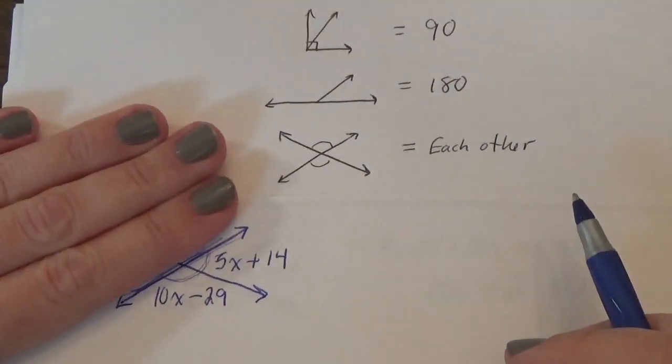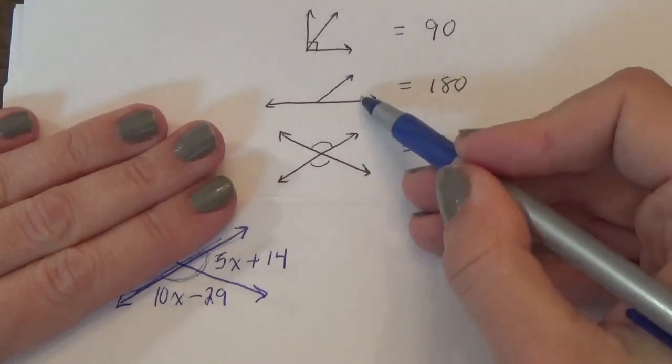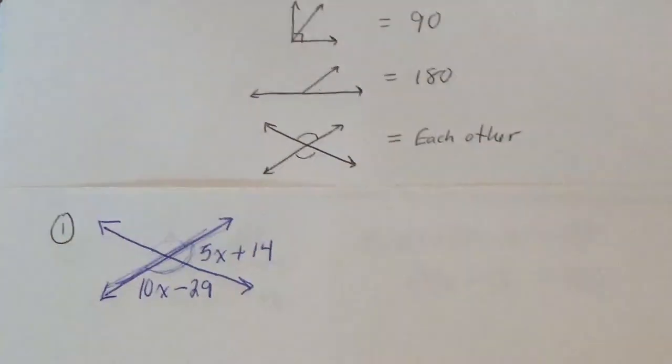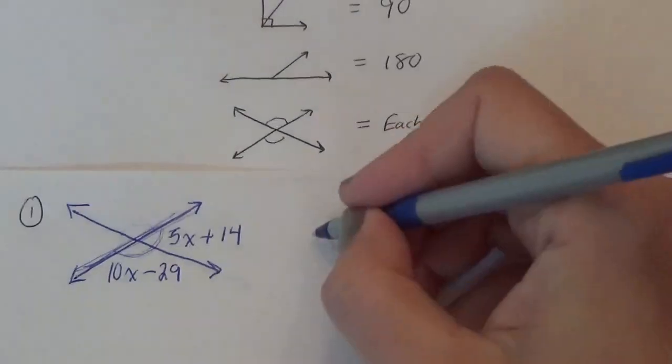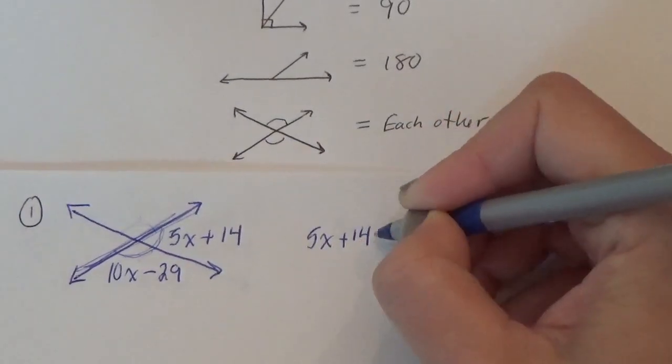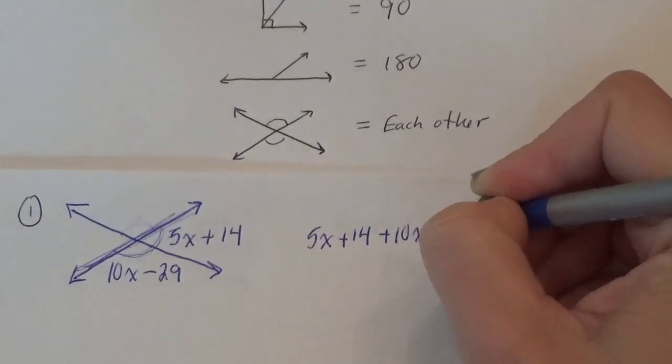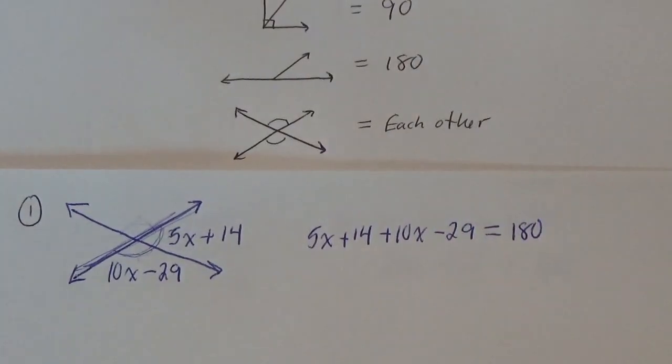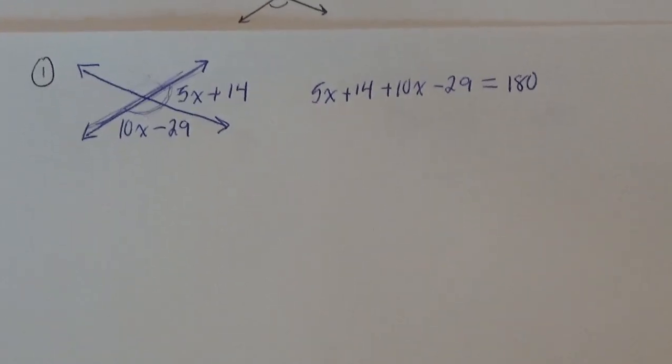It's almost if you took away this part here, it would look like what we've got going on here. So be really careful. This is the hardest one. But for this example, since they are next to each other, we are going to add them all together and they are going to equal 180. So be careful.